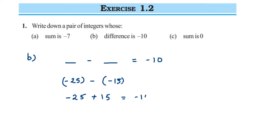The last question asks for a pair of integers whose sum is 0. Take any integer with opposite signs of equal magnitude: minus 5 plus 5 equals 0, or minus 10 plus 10 equals 0. This is a simple question. I hope it's clear — if you have any doubts, drop a comment. Thank you so much for watching.